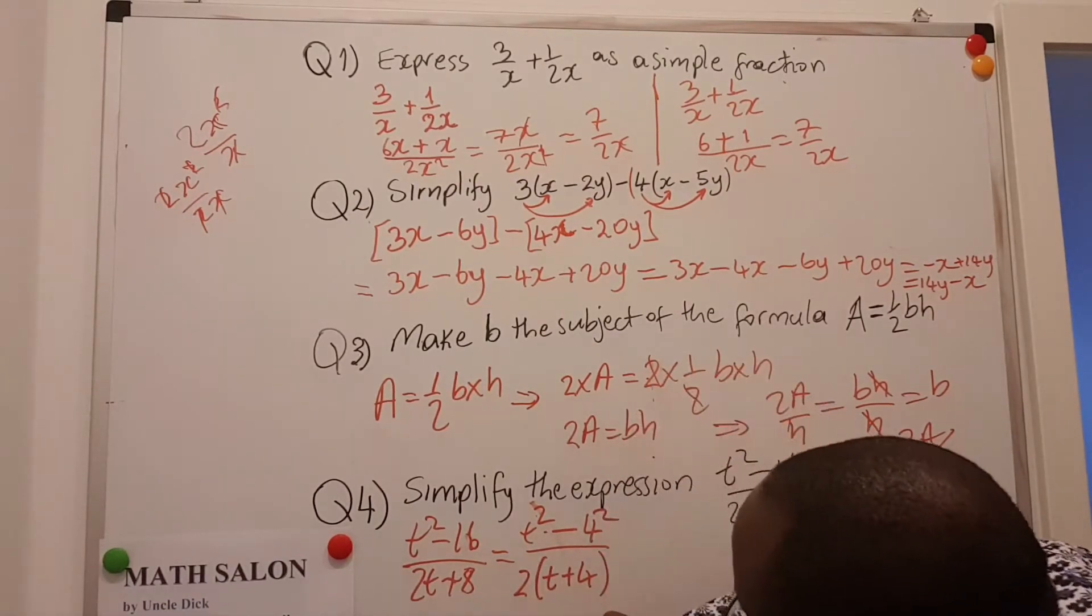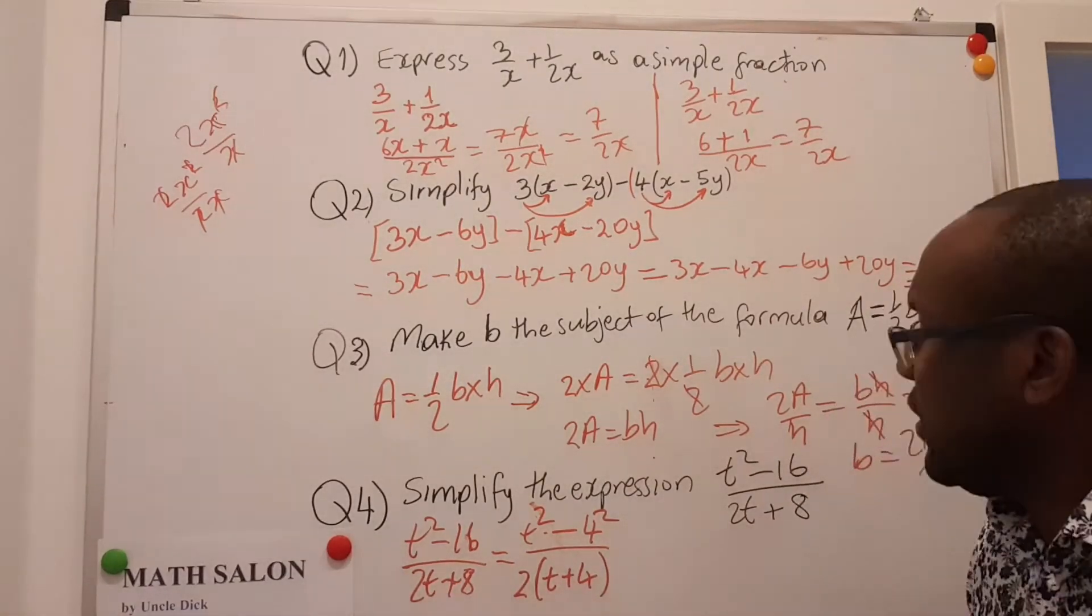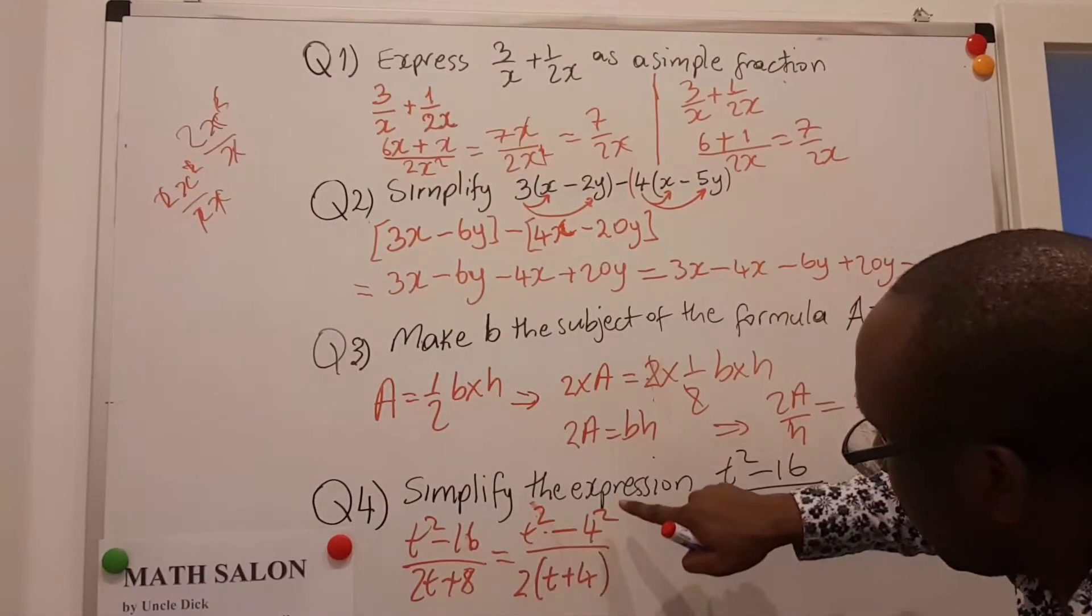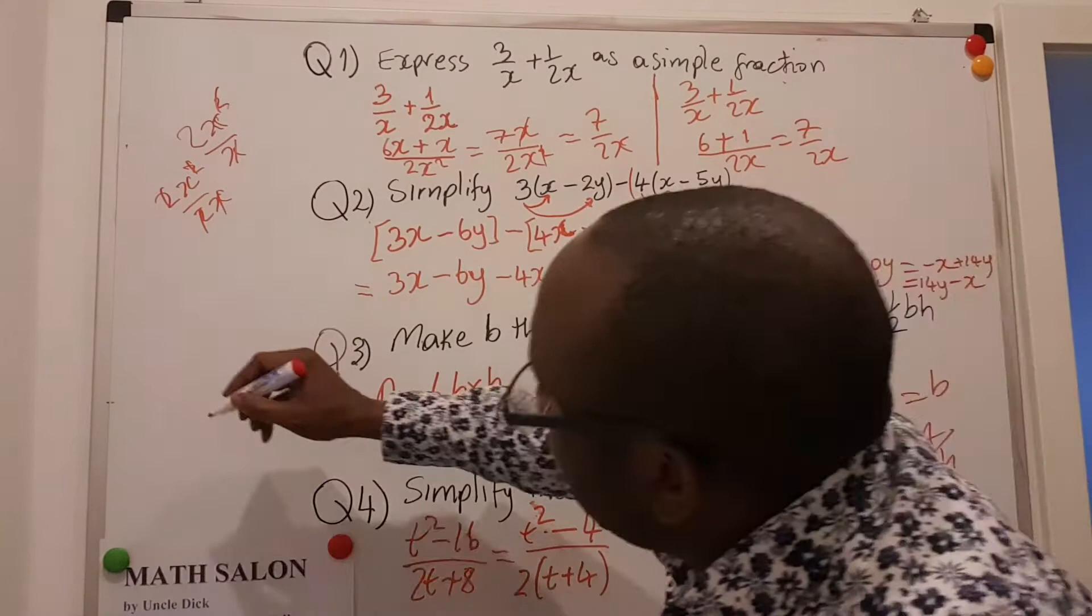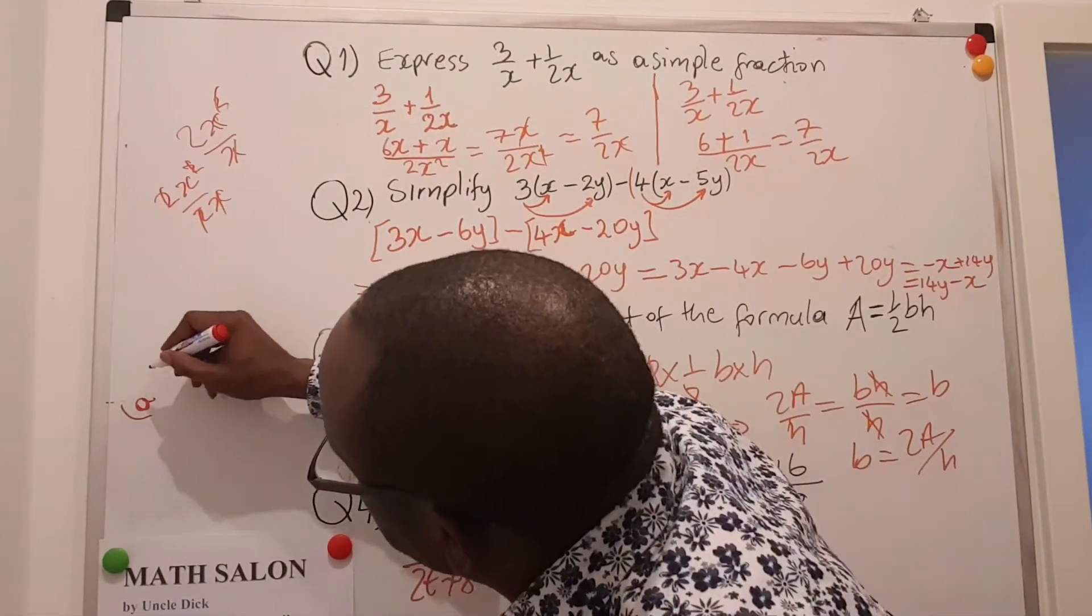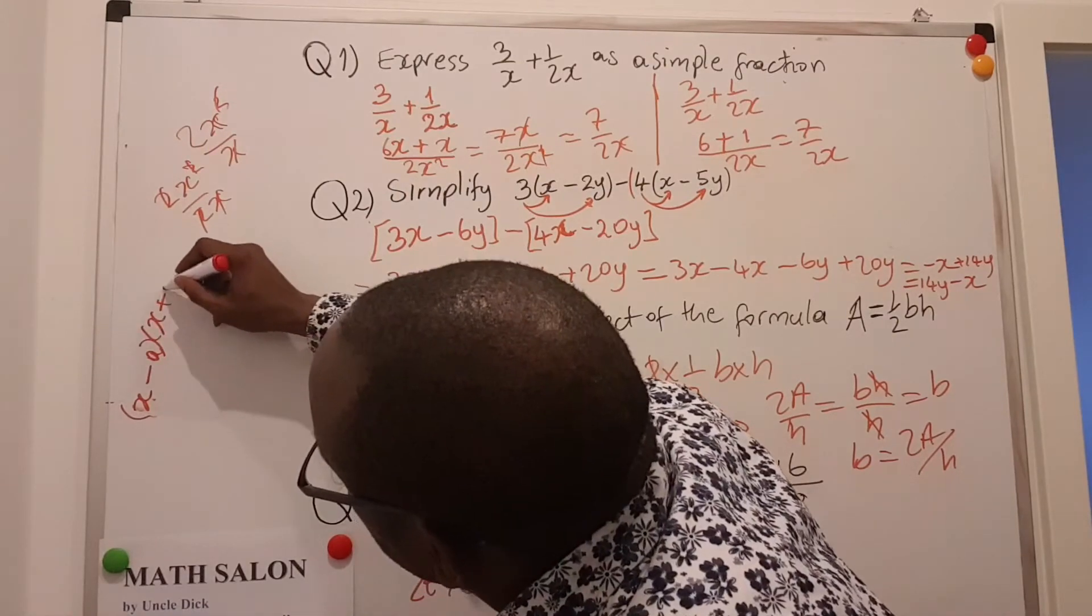That means if I open this again, 2 times T is 2T and 2 times 4 is 8. So I will come back here, so it's good, it's the same. We have to recognize something here above. We call this the difference of two squares. Let's see an example: let's say we have here X minus A multiplied by X plus A.